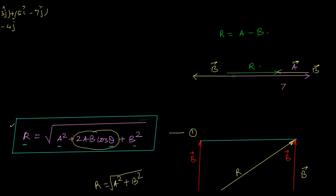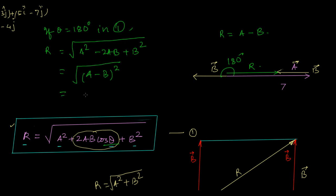Now what is the angle between these two vectors? The angle here is 180 degrees. It means if I put 180 degree here, do I get this? Let's check. So R, if theta is equal to 180 degrees in equation 1, then R is equal to A square. What is the value of cos 180 degree? Minus 1. So this becomes minus 2AB plus B square. This becomes actually A minus B whole square root over which is A minus B.